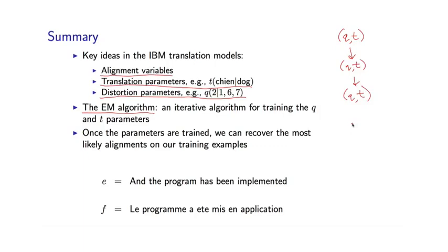And critically, once I have recovered these Q and T parameters using the EM algorithm, I can go back to my training examples and fill in alignments. So a little earlier I showed you how we can recover the most likely alignment for a sentence, once we have the Q and T parameters.